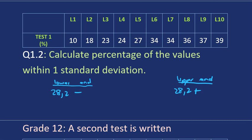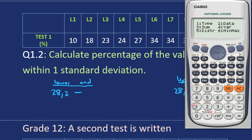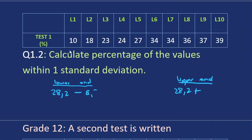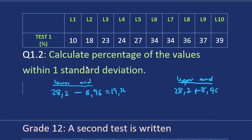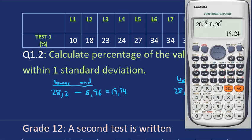In order to check how many of our values are within one standard deviation, if you go to your calculator again, variance, we're looking for standard deviation and that's the standard deviation symbol there. So we select three and our standard deviation will be 8,96. That is our standard deviation value, 8,96. So for the lower end, we take our mean, 28,2, and subtract the standard deviation. So our lower end is 19,24. Then our upper end, we add the standard deviation, 37,16.